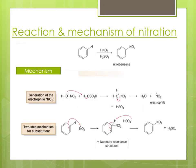Coming to the reaction and mechanism of nitration: benzene reacts with concentrated HNO₃ in the presence of concentrated H₂SO₄ to form nitrobenzene. In nitration, we take a mixture of concentrated HNO₃ and concentrated H₂SO₄. The concentrated H₂SO₄ protonates the nitric acid, and the protonated species loses a water molecule to give the electrophile NO₂⁺, also known as the nitronium ion. This attacks on the benzene ring in the second step, and the proton is removed to give nitrobenzene in the last step.